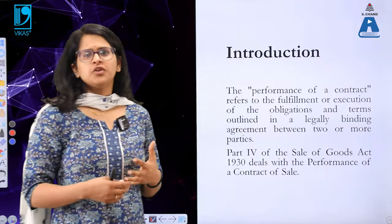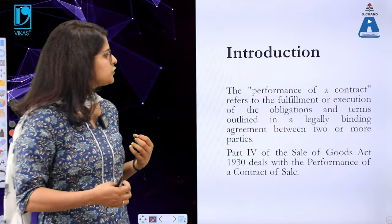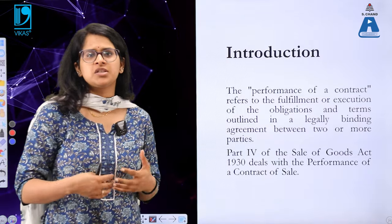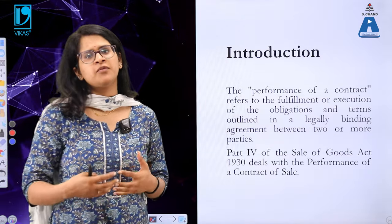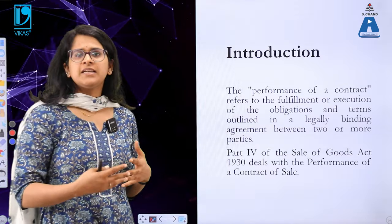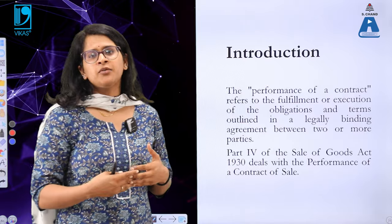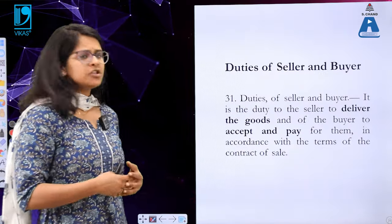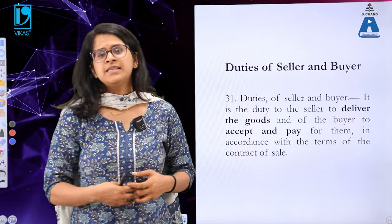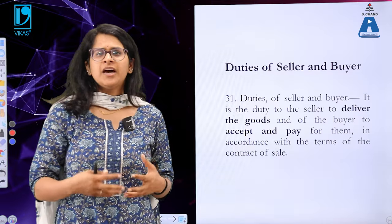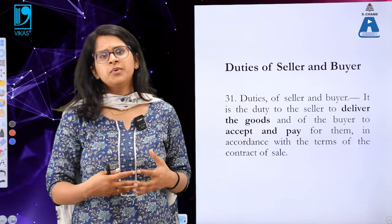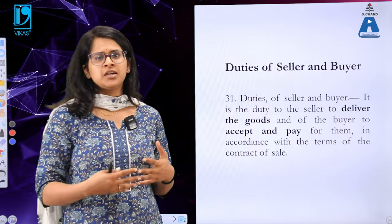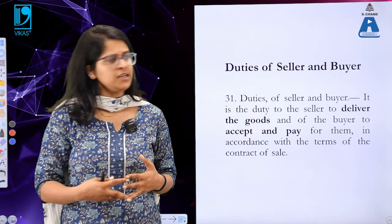The performance of a contract basically refers to the fulfillment or execution of certain obligations that arise by way of that contract. This is given under Part 4 of the Sale of Goods Act, 1930. The duties of the buyer and seller are very important when we talk about performance of a contract, and they are enumerated under Section 30 of the Sale of Goods Act.